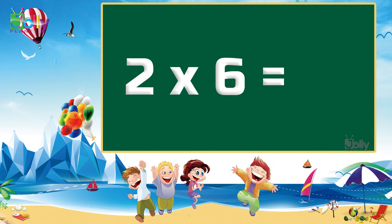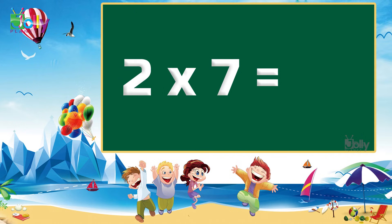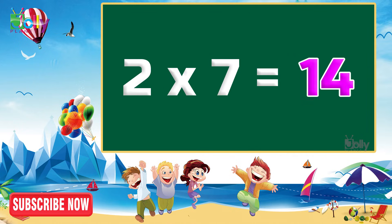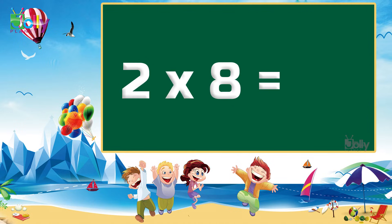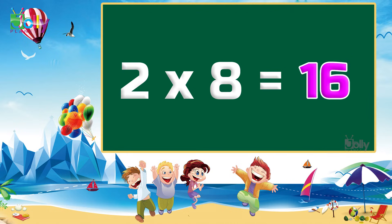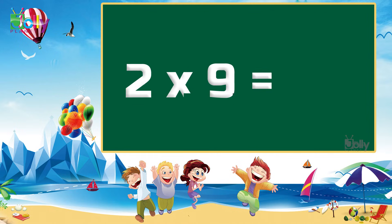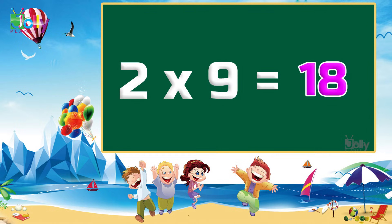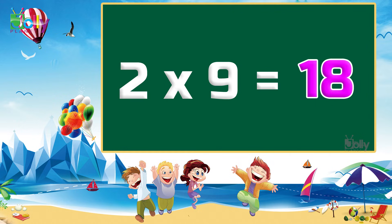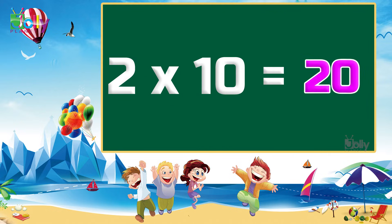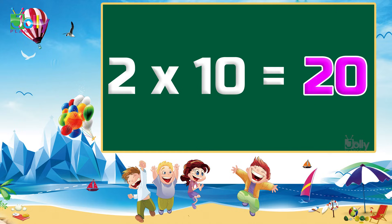Two six's are twelve. Two seven's are fourteen. Two eight's are sixteen. Two nine's are eighteen. Two ten's are twenty.